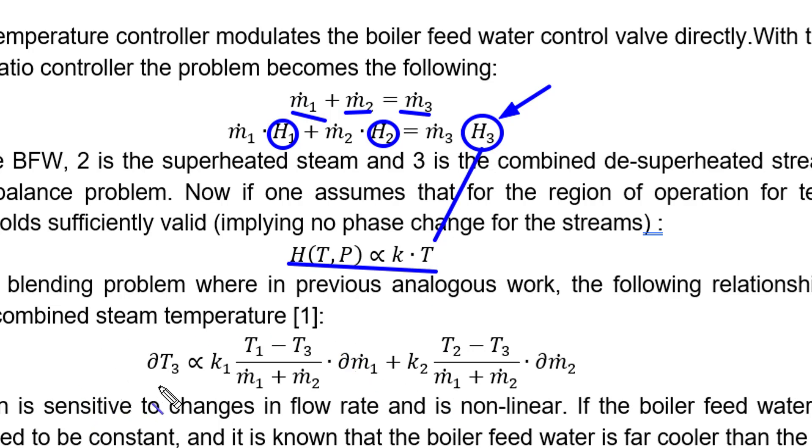We replace the subject of the equation and do the first order derivative with respect to the exit temperature. It shows you that ∂T3 is a function of (kbfw/(m1+m2))·∂m1, which is (T1-T3)/(m1+m2) times the change in the feed mass. This is the first order perturbation. It's quite important because it shows the relationship of the gains.